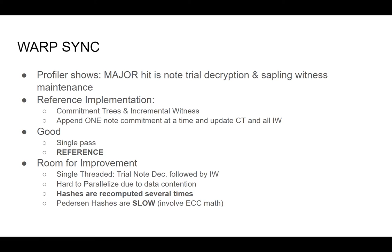So the process is: first try to decrypt, then update your commitment tree and incremental witnesses. The data is separated — each class, commitment tree and incremental witness, has its own representation of the Merkle tree path. Because of that, it's hard to parallelize, because it's hard to know in advance which element of the tree each incremental witness and commitment tree will impact.